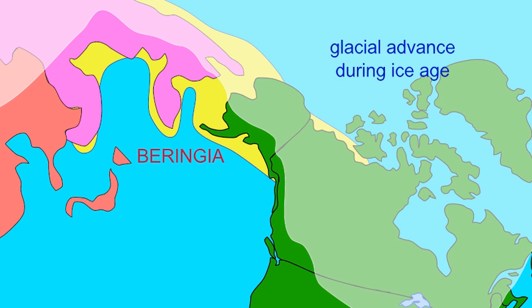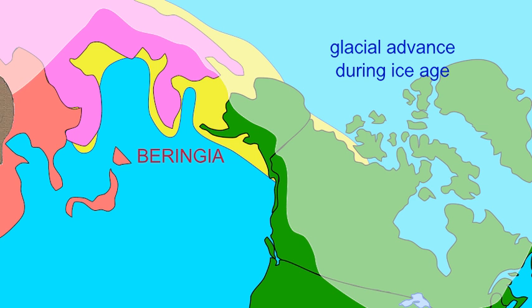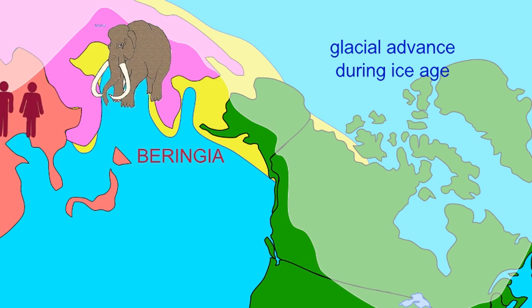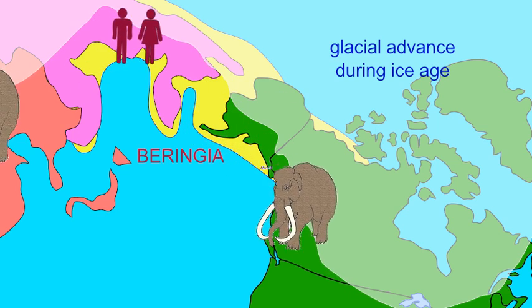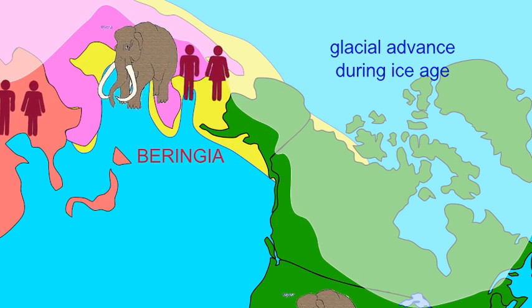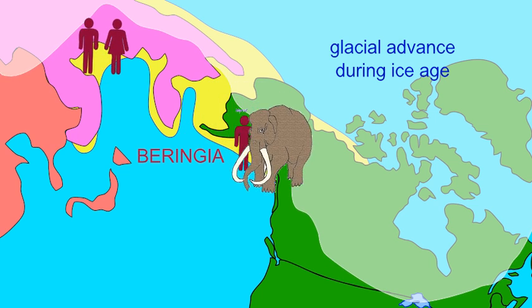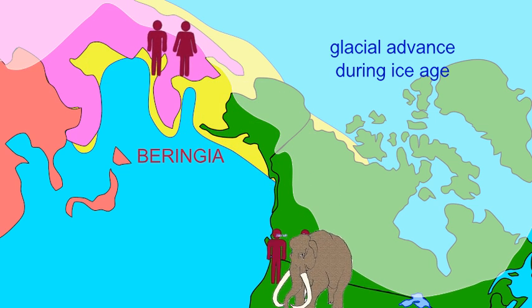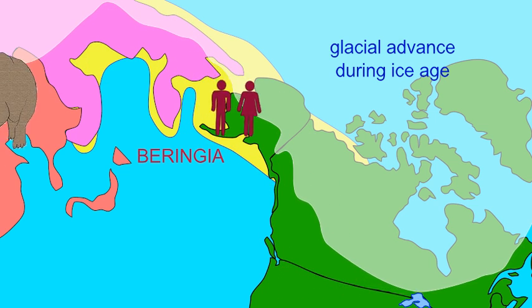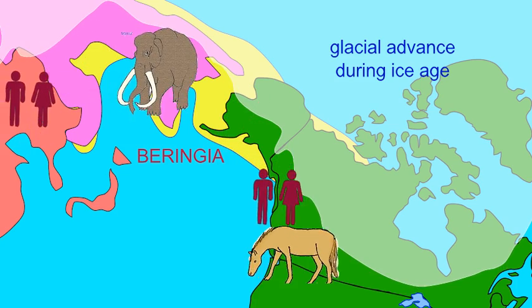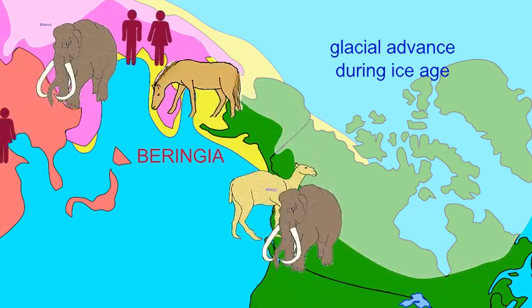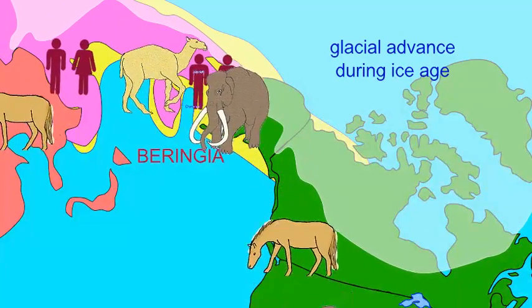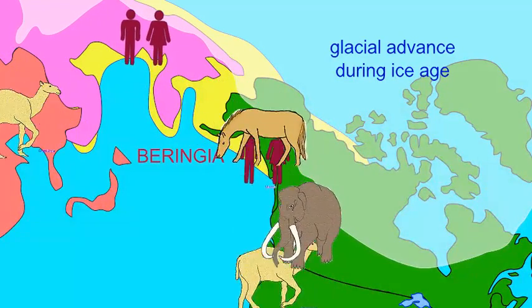A number of organisms from Asia were able to travel across Beringia and reach North America, including mammoths and the first humans who would populate the Americas and become the ancestors of Native Americans. While a number of species would migrate from North America and reach Asia, such as one-toed horses and camels.